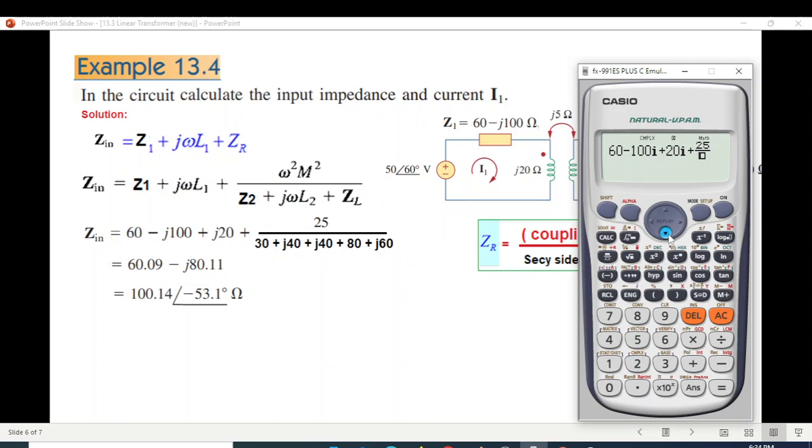25 divided by, press A, 30 plus 40 I, plus 40 I again, plus 80 plus 60 I. Press equal sign and you get the answer: 60.09 minus 80.11 I.